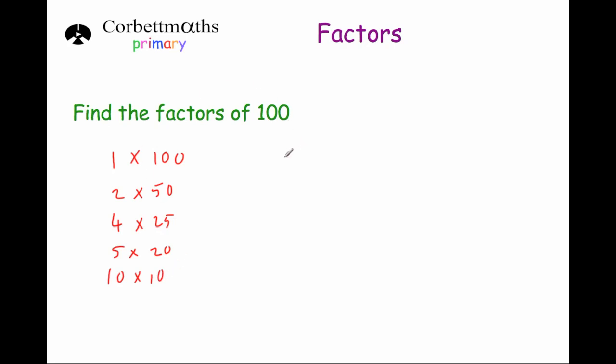So that means that the factors of 100 are 1, 2, 4, 5, 10, 20, 25, 50, and 100. And they're all the factors of 100.